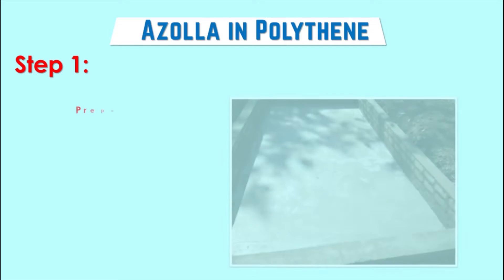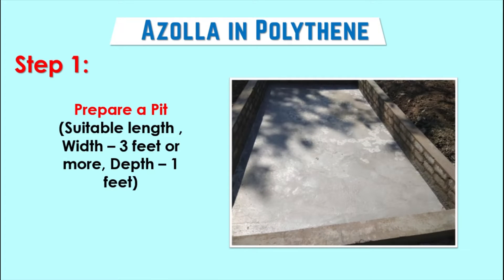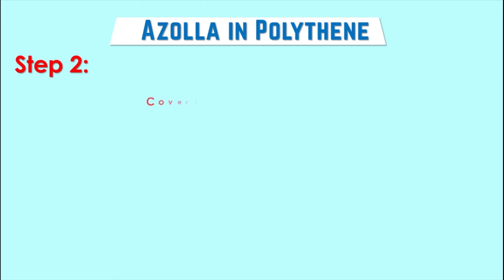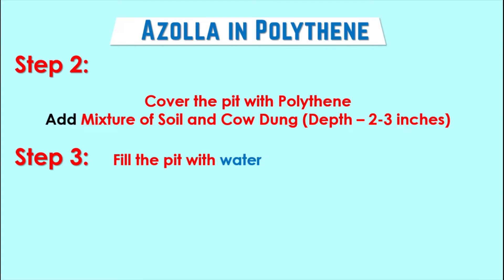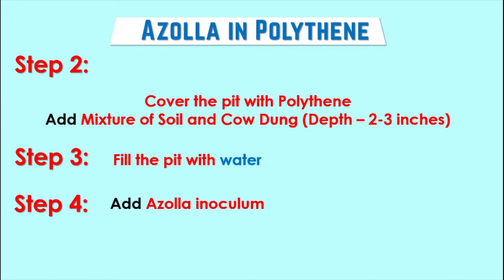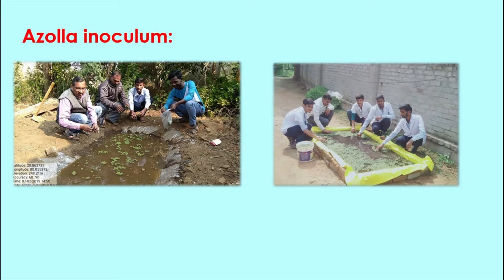The process of Azolla cultivation in polythene is done step by step. First, prepare a pit of suitable length and width (three feet or more) with one-foot depth. Second, cover the pit with polythene and add a mixture of soil and cow dung to a depth of two to three inches. Third, fill the pit with fresh water. Fourth, add Azolla inoculum in appropriate quantity depending on the size of the pit.